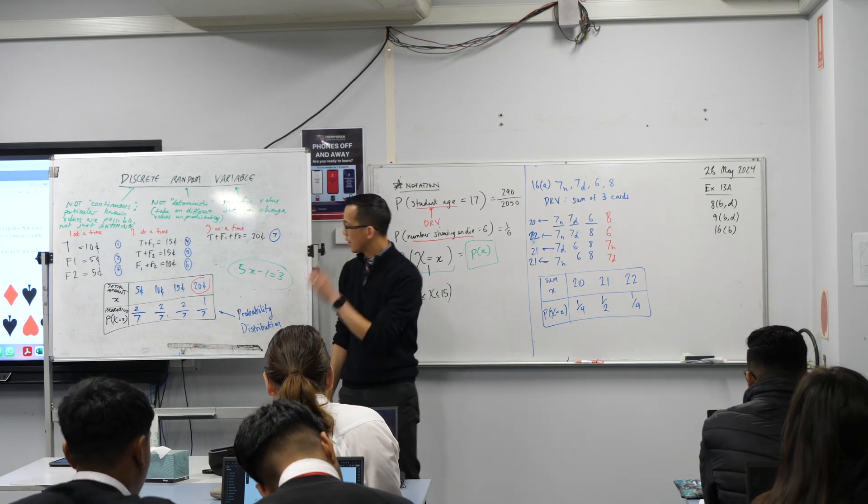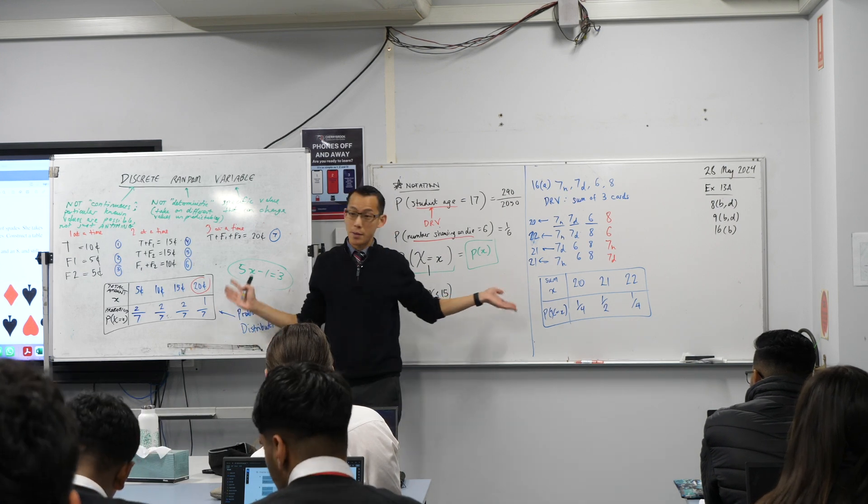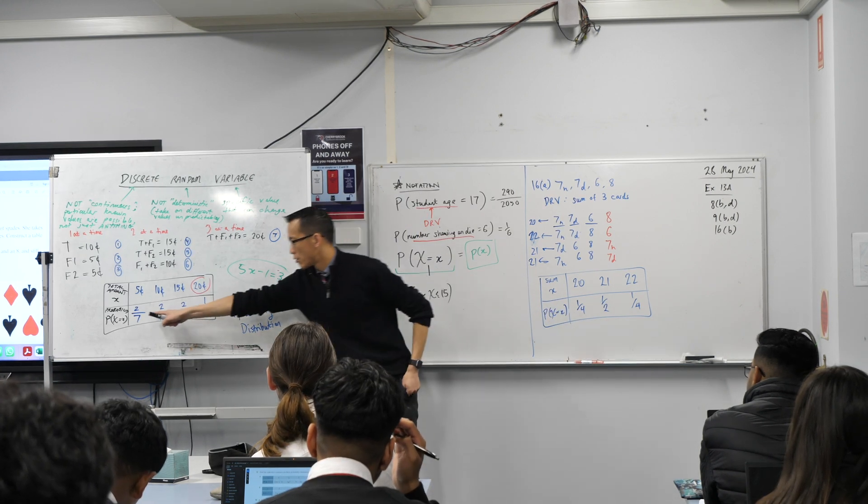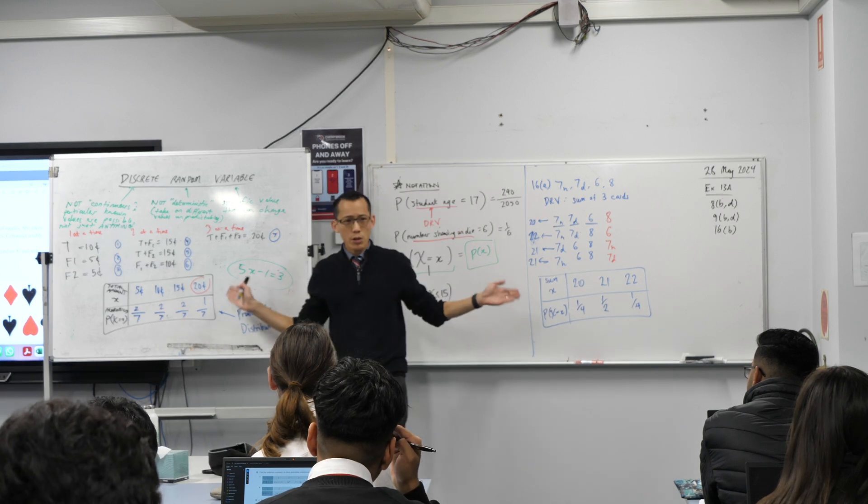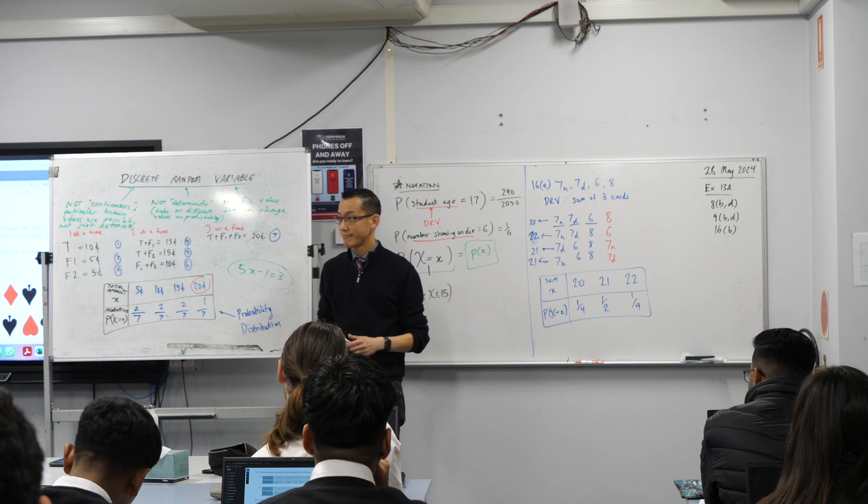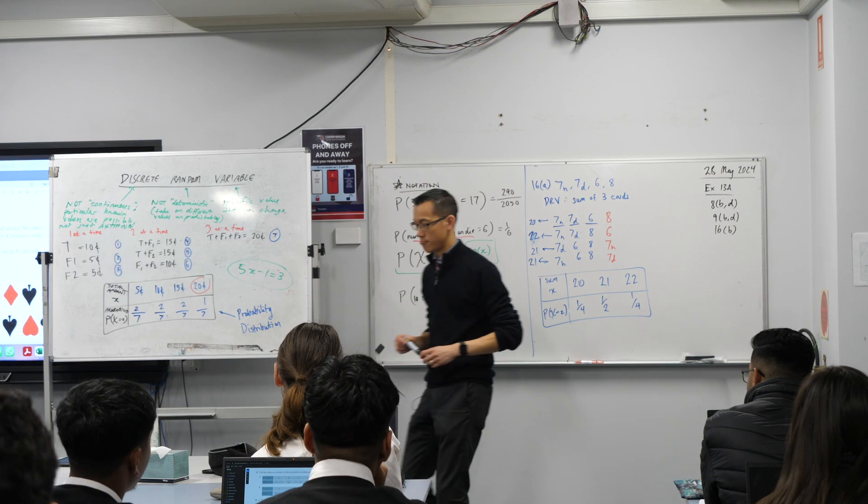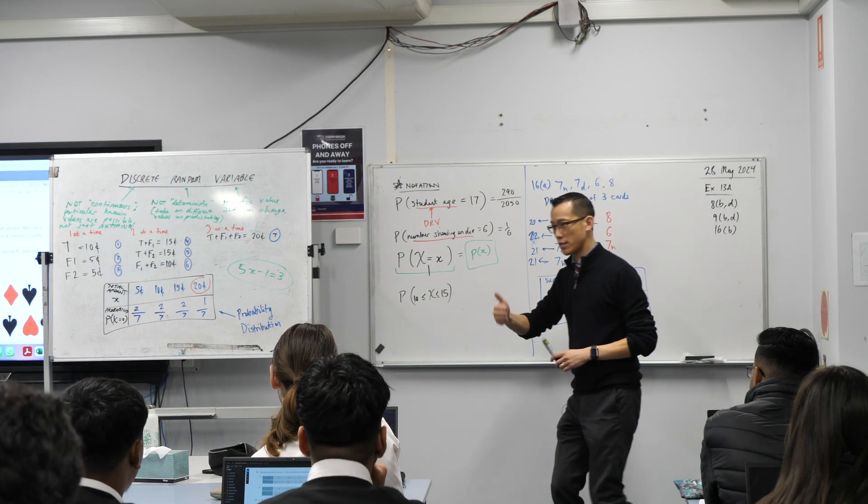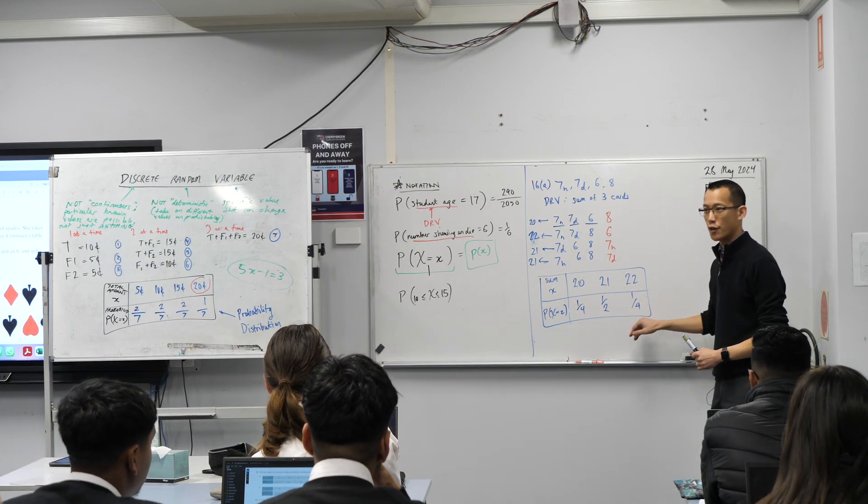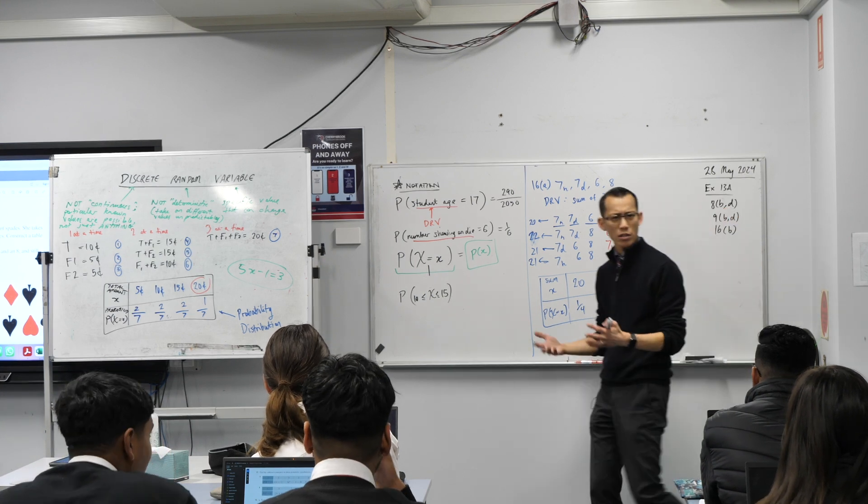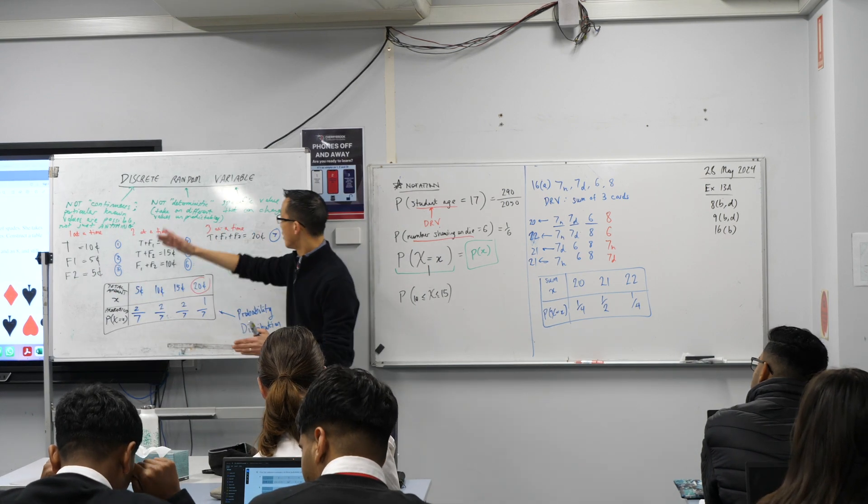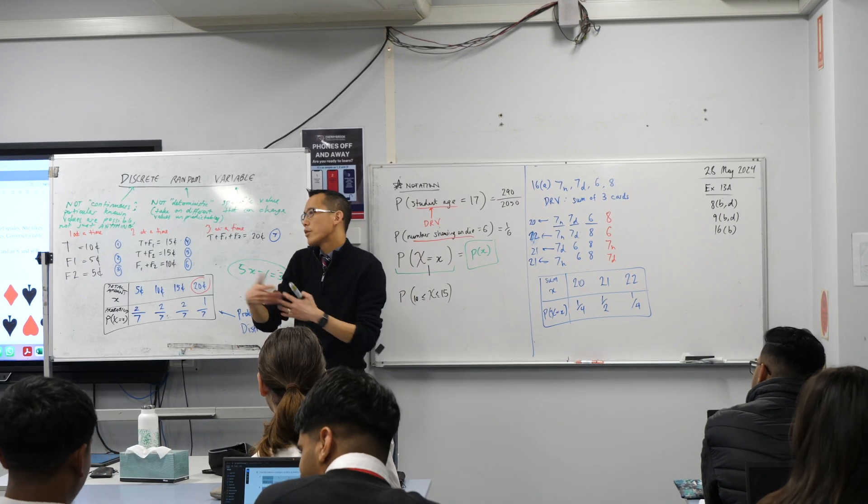There's just two things I want to point out. Have a look at the two probability distributions that we've just constructed. So here are the fractions down here, and then here are the fractions down here. What do you notice about both of them? These two sets of fractions. They're different, obviously, but do they share anything in common? When I add up two-sevenths plus two-sevenths plus two-sevenths plus one-seventh, I get one. And when I add up a quarter, a half, and a quarter, I get one. Now, of course it should, because going back to what we've known about probability for years and years and years, if we've captured everything, if every possible variable is included, then all the probabilities should add up to one. Otherwise, we've missed things.